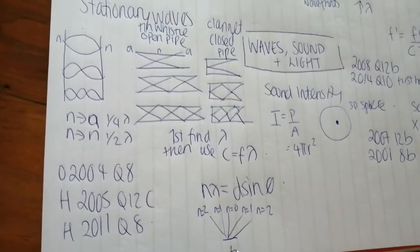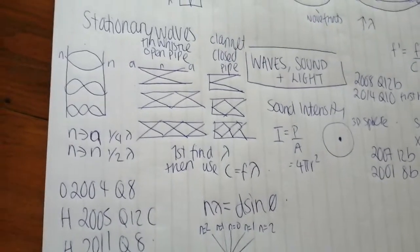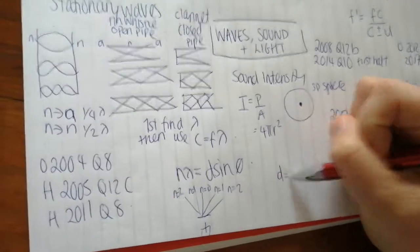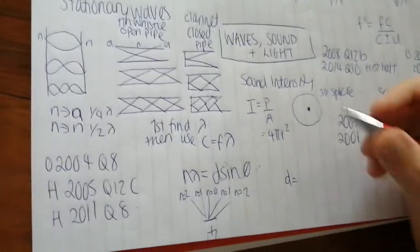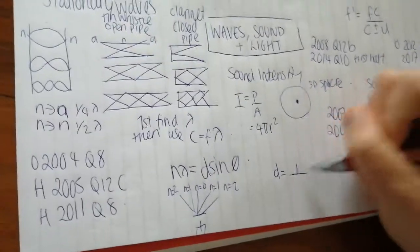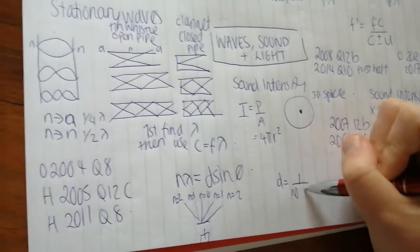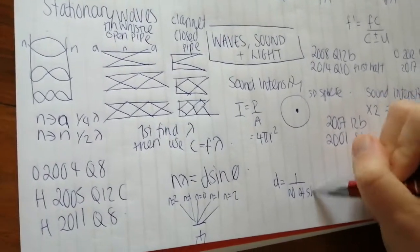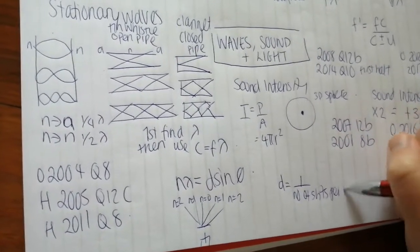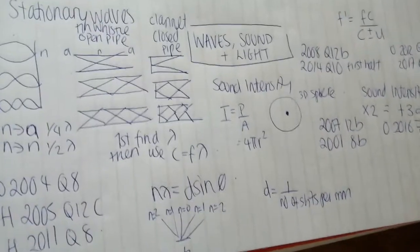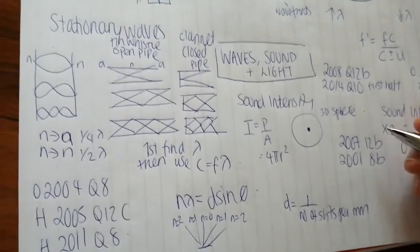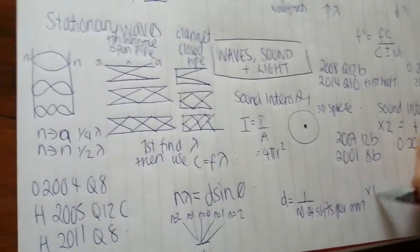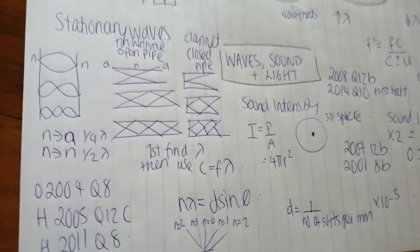So you're normally told that you have, let's say 300 lines per millimeter. To find out D, you want to find out how many millimeters in one line. So it's D is one over the number of lines or slits per millimeter. That would give you your answer in millimeters. And then to change it to meters, obviously just your normal procedure, multiplying by 10 to the minus three.